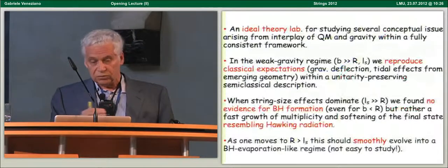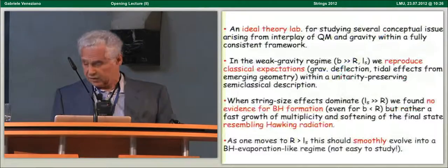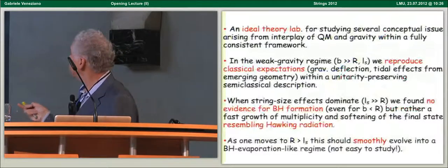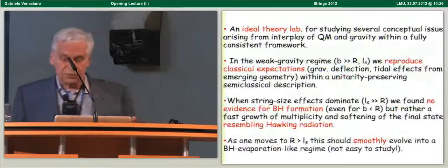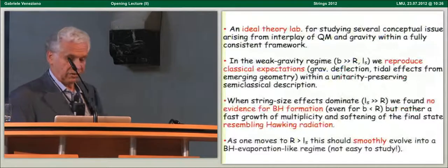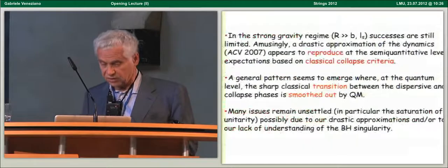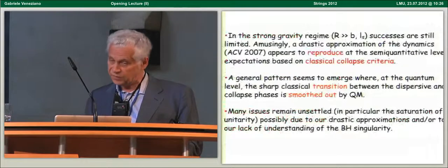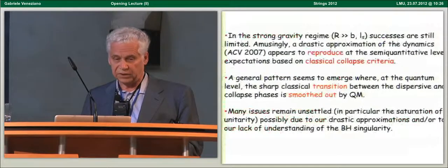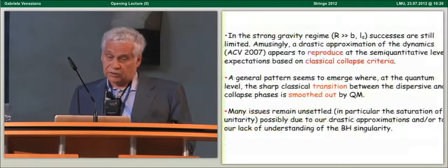I'll give some formula in a moment, and a corresponding softening of the final state which started to resemble Hawking radiation. As one moves to R bigger than L string, then this should smoothly evolve into a black hole evaporation-like regime, but unfortunately it is not very easy to study. Some approximation failed completely there.